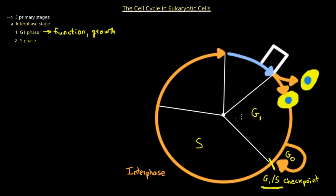In the S phase, once the cell decides it's going to divide and everything is okay, DNA replication begins. The S phase is typically associated with DNA replication. During the S phase, the cell duplicates each chromosome — including both DNA and chromosomal proteins — and continues synthesis of other molecules. It still continues its function and possibly even grows, but what the S phase is really associated with is DNA replication. It doubles the number of chromosomes.